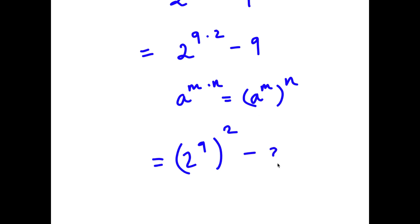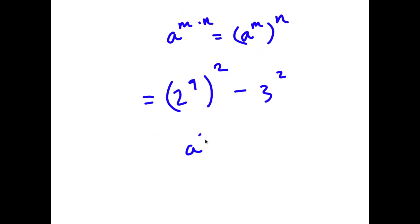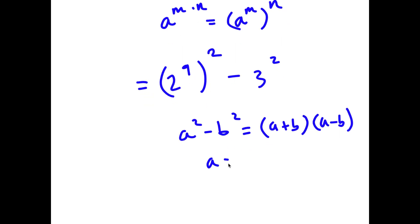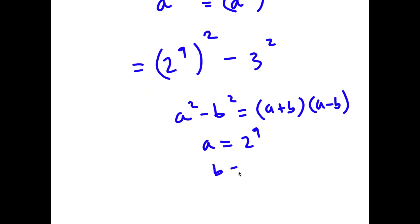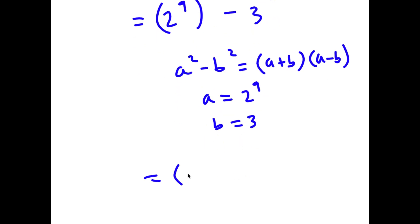Minus 9 is the same thing as 3 to the power of 2. Now if I have something in the form a squared minus b squared, this is equal to a plus b times a minus b. So in this case a is 2 to the power of 9 and b is 3. So I have 2 to the power of 9 plus 3 times 2 to the power of 9 minus 3.